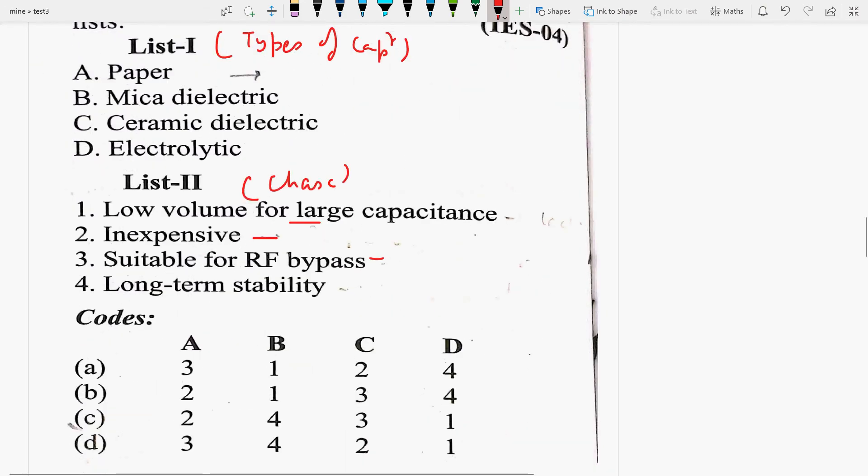Now, we will see that. The question of this question is what? This question of right answer is what? Look. Paper is inexpensive, not expensive. Paper is generally costly. So, it is the type of two options. Microdielectric is long term stability. This is the type of capacitor is used for 4th option.